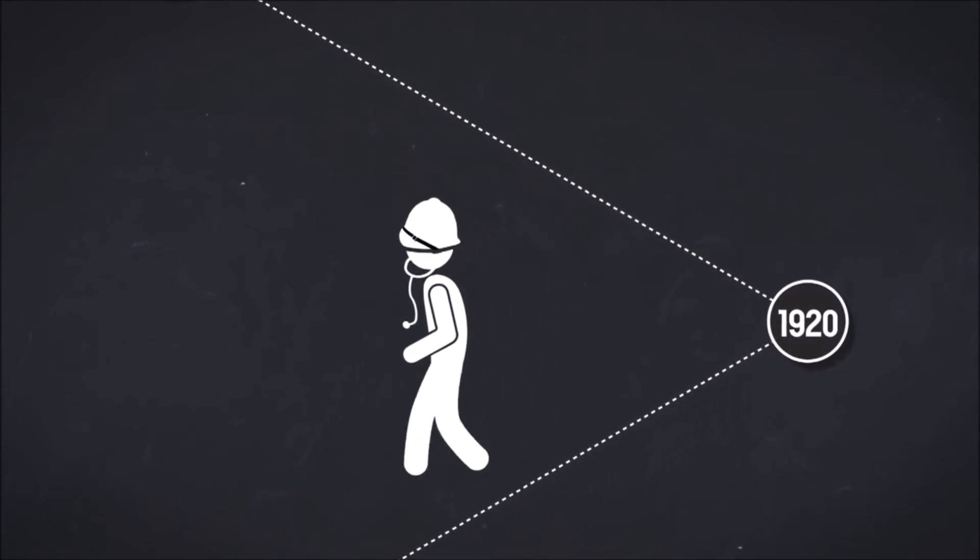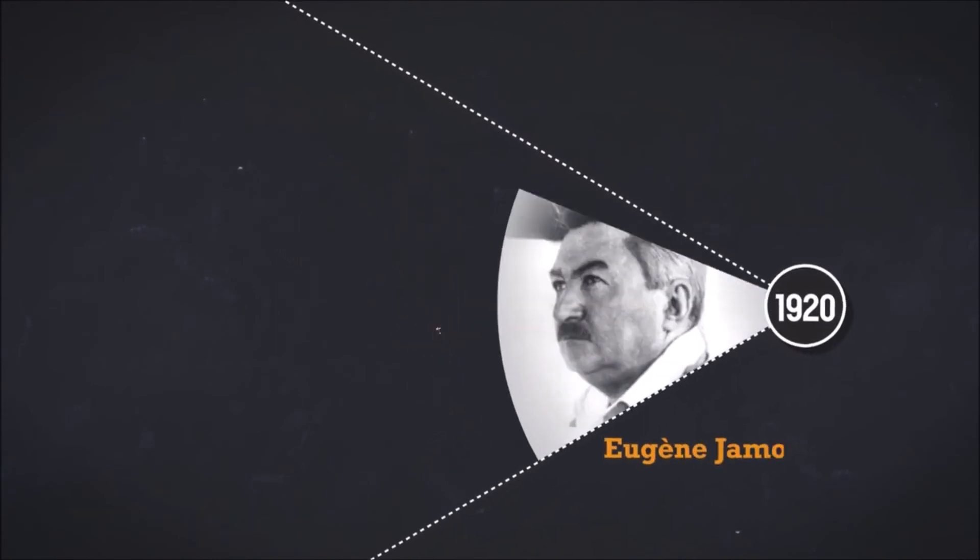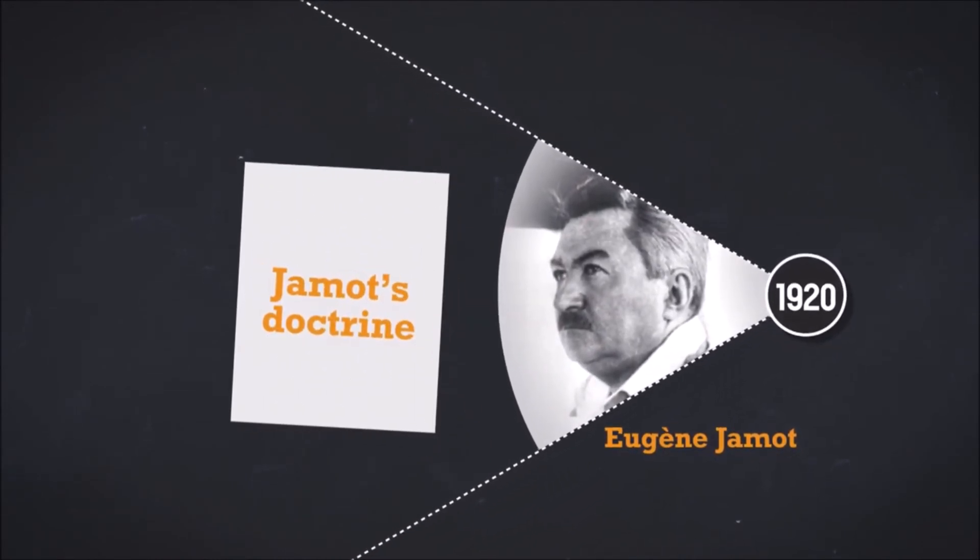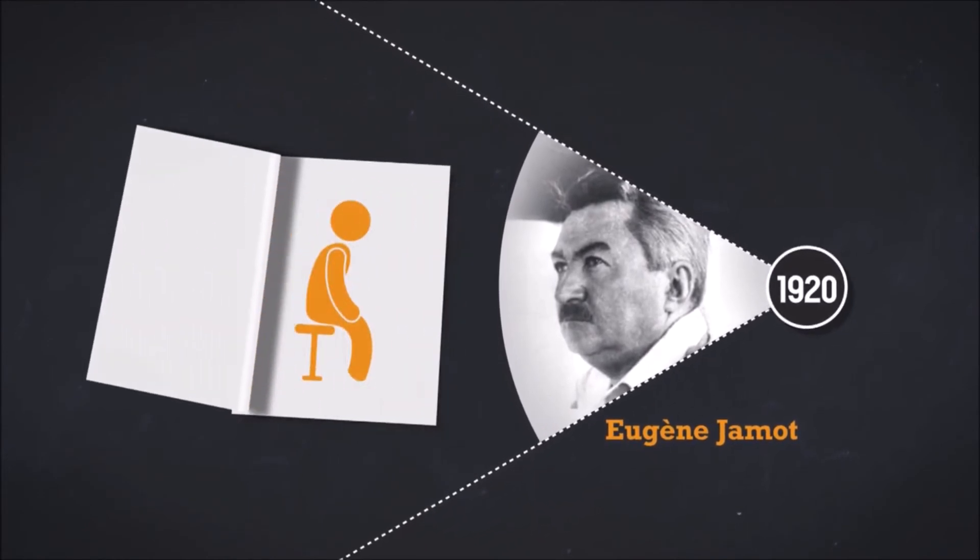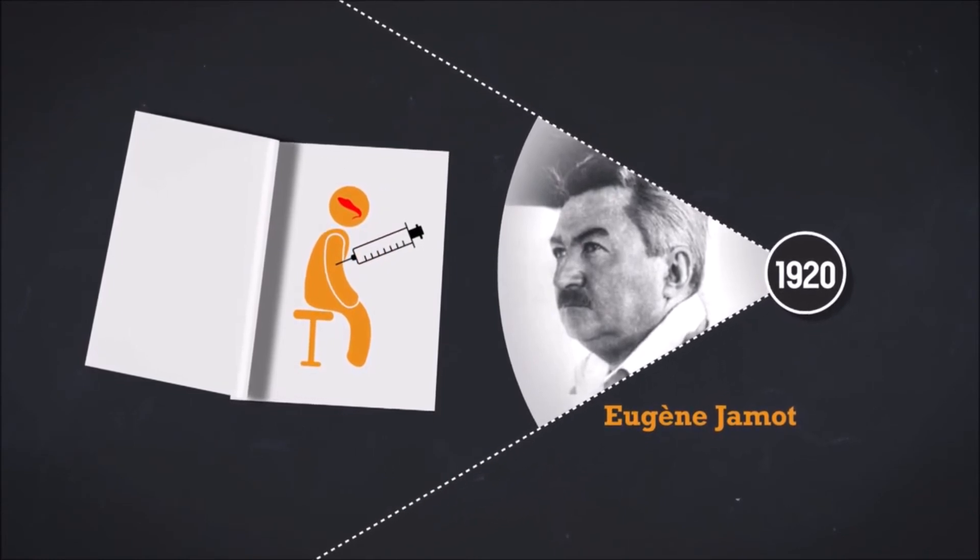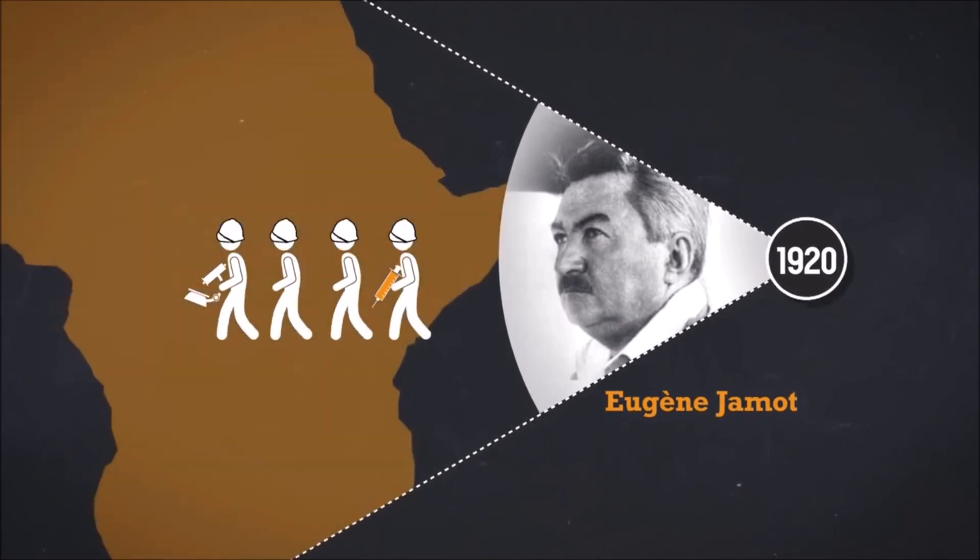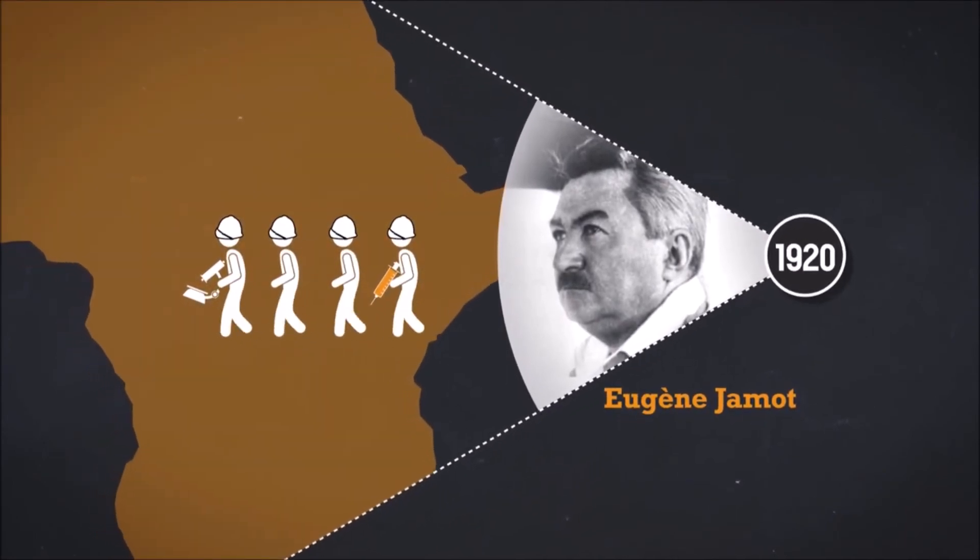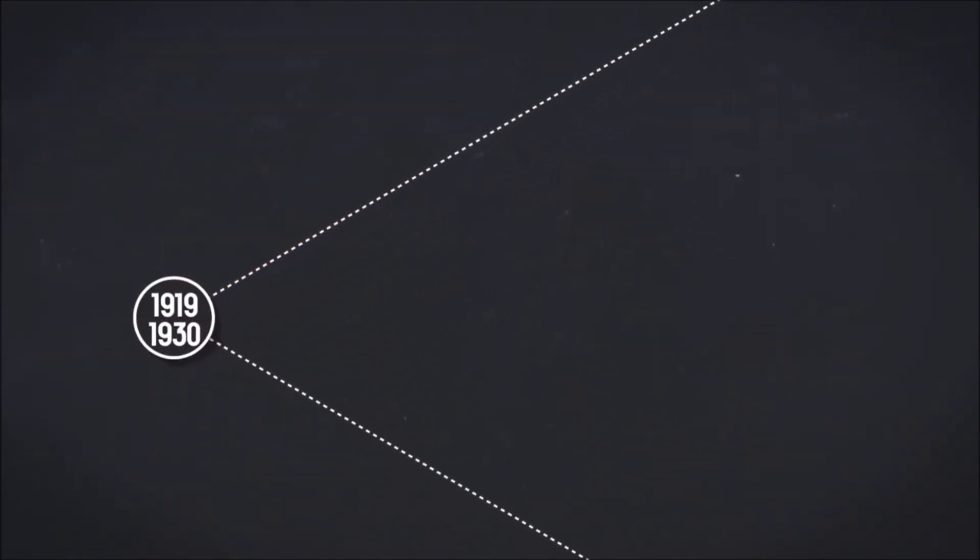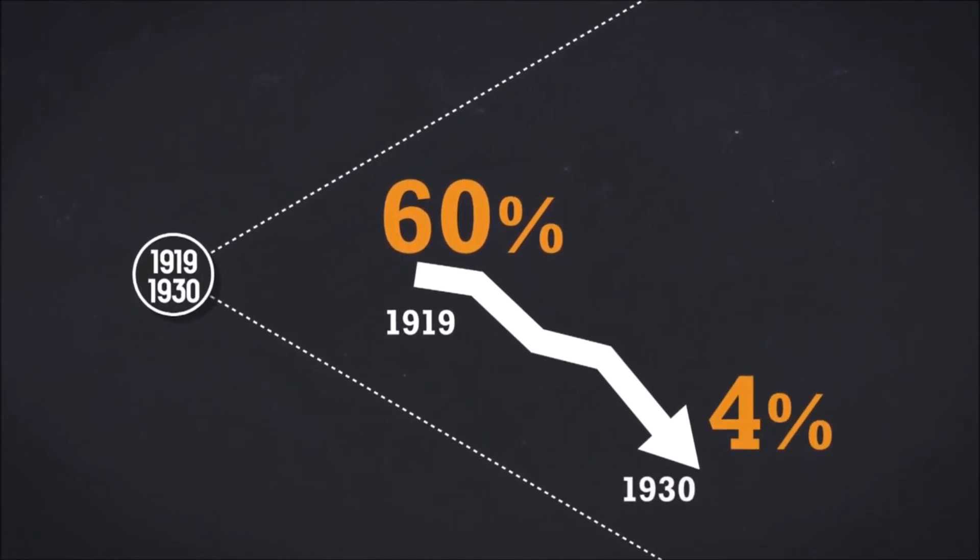At the beginning of the 1920s, colonial medicine attempted to eradicate the disease. Eugène Jamot, a French military doctor and director of the Pasteur Institute in Brazzaville, laid the foundations for what came to be called Jamot's doctrine: identifying and treating all possible cases to eliminate the reservoir of parasites in humans. Armed with microscopes, he and his mobile teams traveled to the remotest of regions, seeking out patients they then treated with arsenic derivatives. In Cameroon, between 1919 and 1930, Jamot's doctrine brought down prevalence, meaning the percentage of the population with the disease, from 60% to 4%.